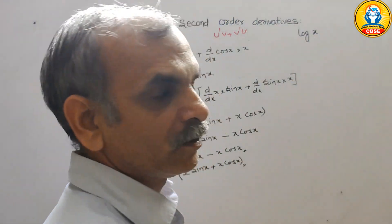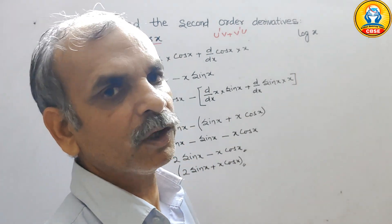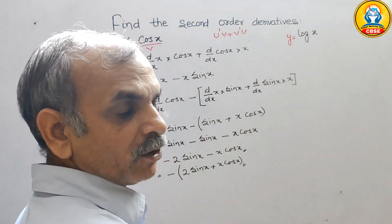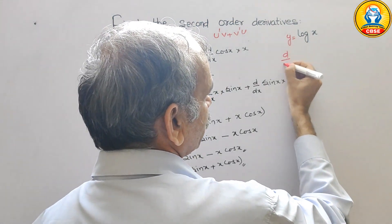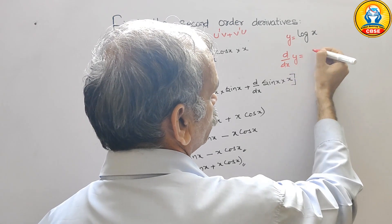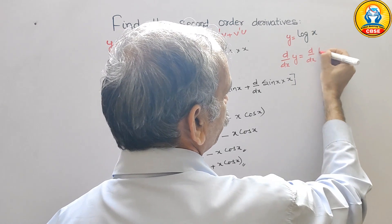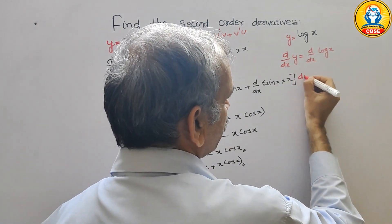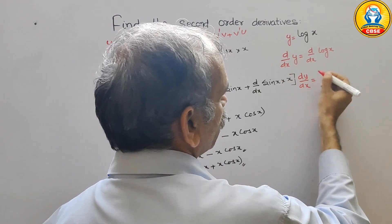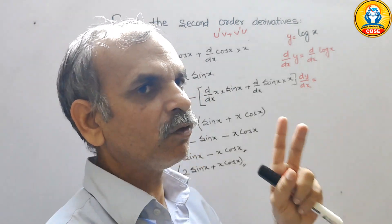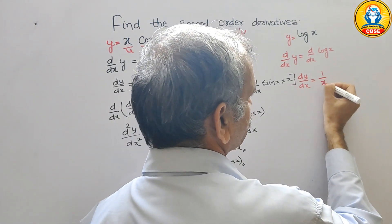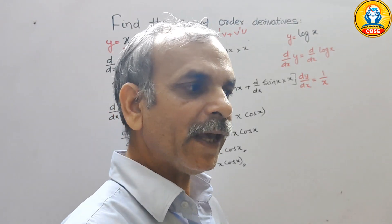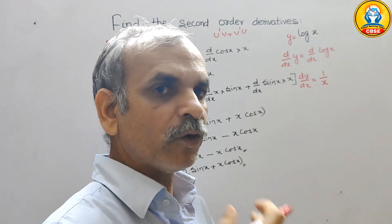Now here comes log x. We will take y equal to log x. Now differentiate first: d by dx of y equals d by dx of log x. So dy by dx equals 1 by x. This 1 by x we can rewrite as x to the power of minus 1.